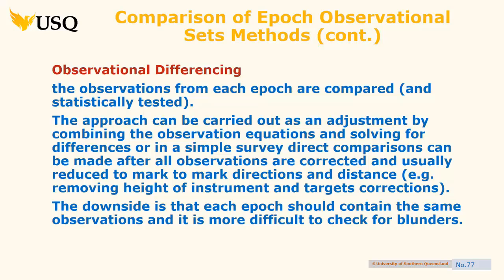There is another way: you can compare observations directly. As with alignment — are things in a line? What you're really doing is comparing observations. You can compare distances; it doesn't always have to be a coordinate-based approach. If the distances are in a critical direction, then direct observation comparison of distances is just as good as any fancy adjustment.